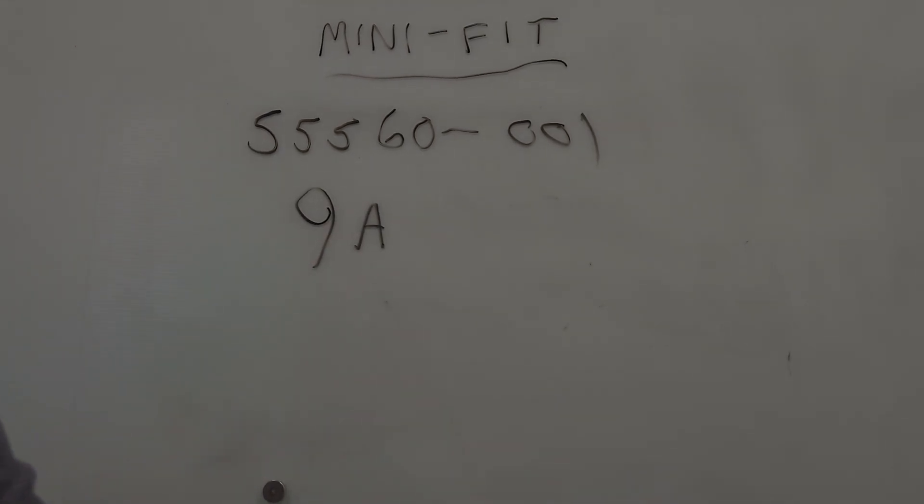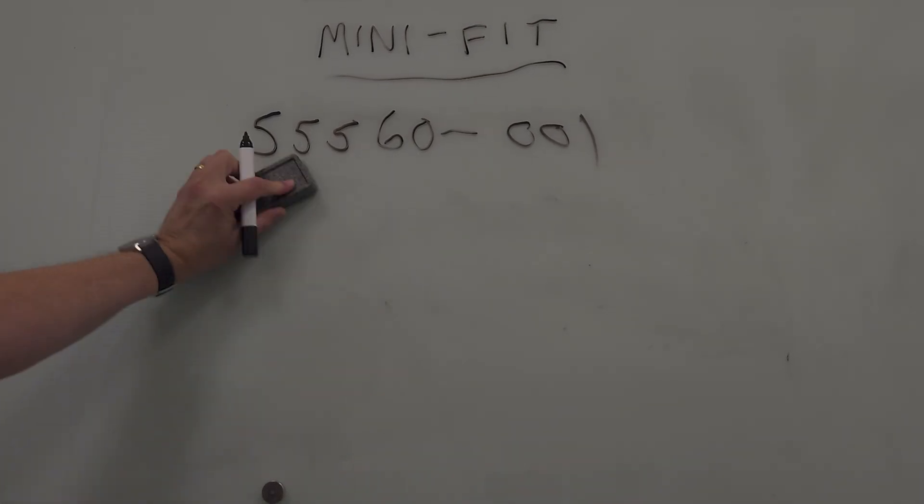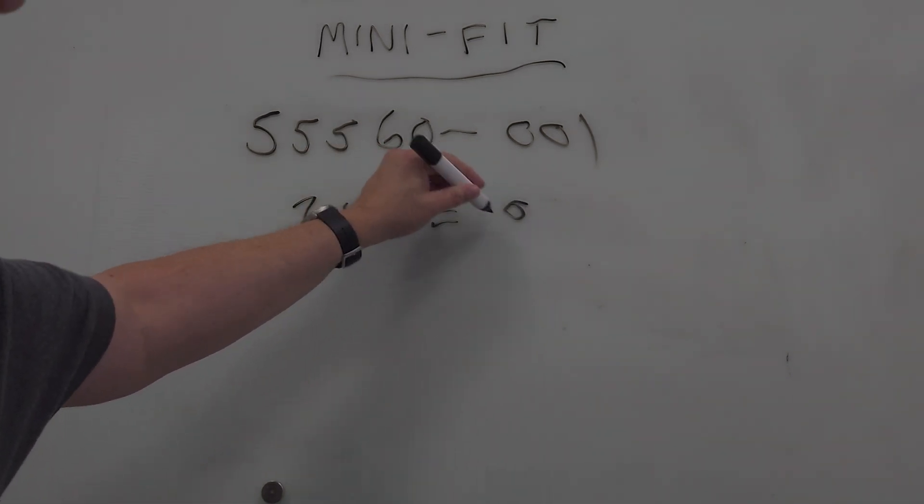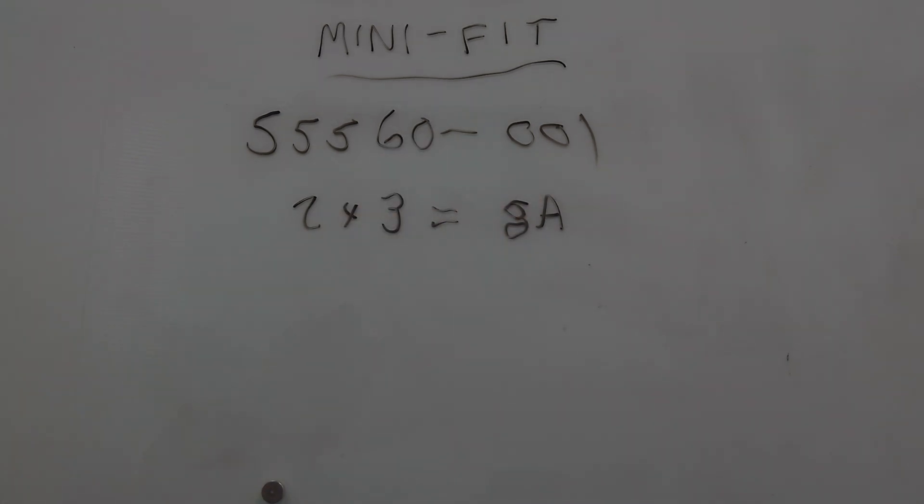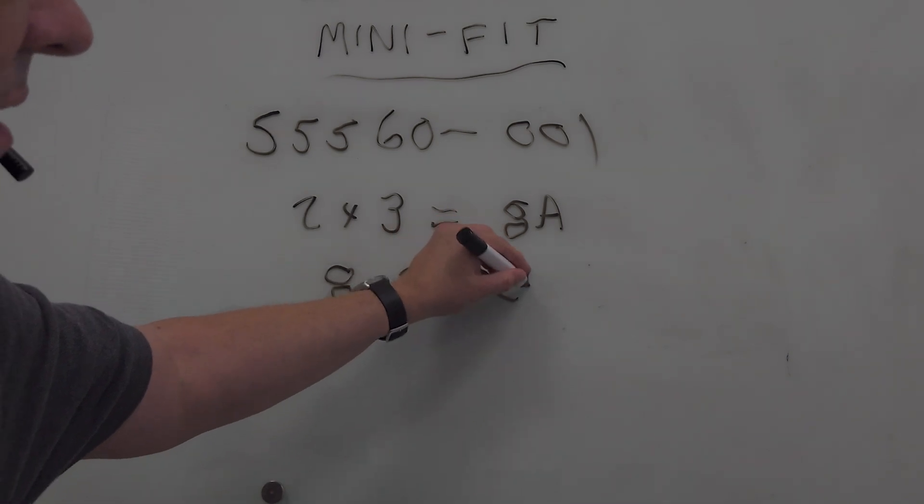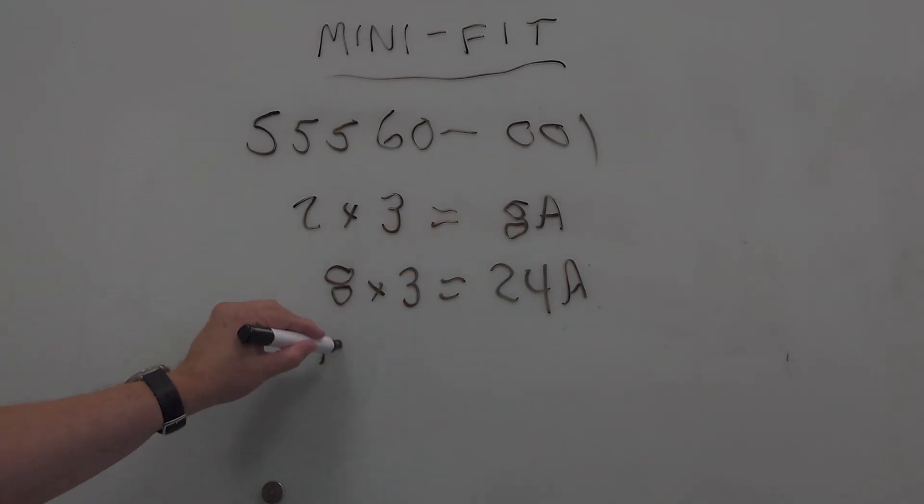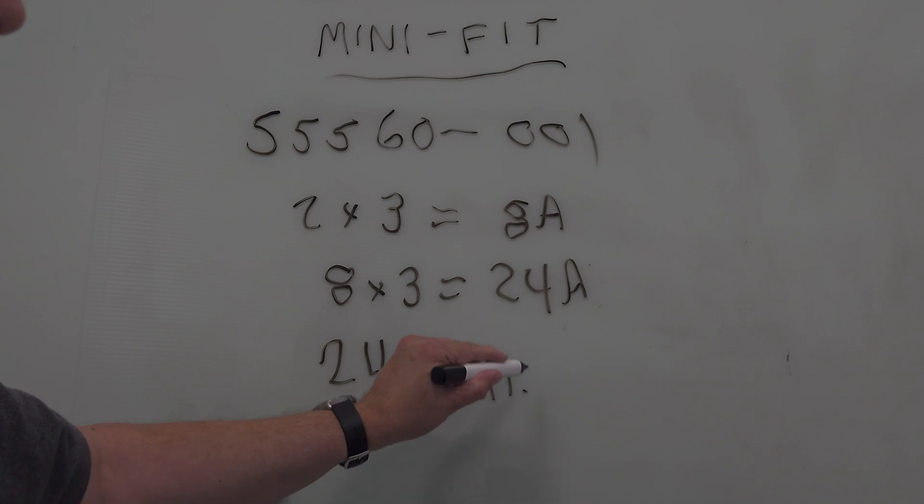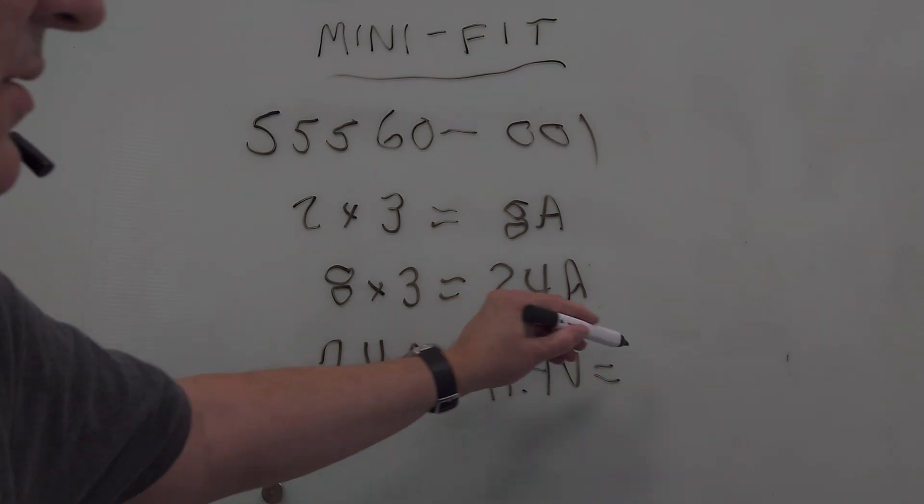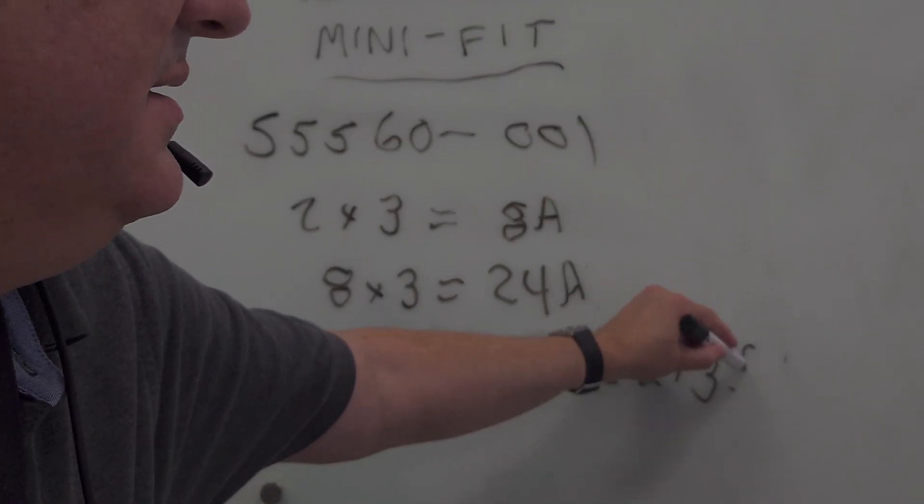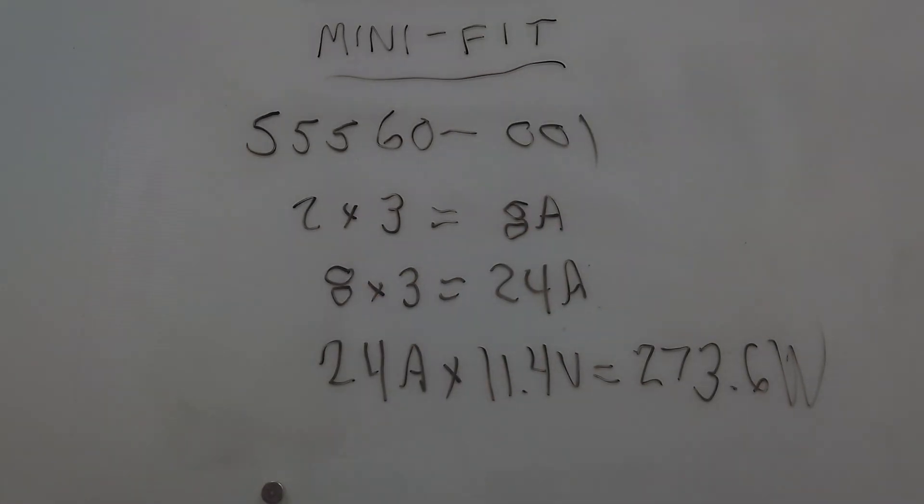Tin plated or gold plated doesn't matter. I typically use tin plated because if you mix tin and gold, you get what's called galvanic corrosion and the stuff sticks together. So anyway, nine amps is the spec, but it is derated for dual pin configurations. So two by three is actually rated at eight amps. That's a funny eight. Sorry about that. It almost looks like a G. Anyway, so eight amps and eight times three is 24. 24 amps. And again, if we take that 24 amps and we multiply that by our 11.4 volts, we have 273.6 watts.